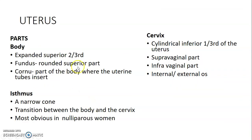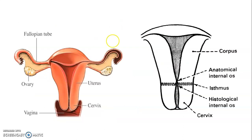The uterus has different parts: a body which is the expanded superior two-thirds, a rounded superior part called the fundus, and a cornu which is the part where the uterine tubes enter. The uterus also has an isthmus, which is a narrow zone forming a transition between the body and the cervix, mostly obvious in nulliparous women. Then we have the cervix, which is the cylindrical inferior third of the uterus, having a supravaginal part and an infravaginal part, and also an internal and external os.